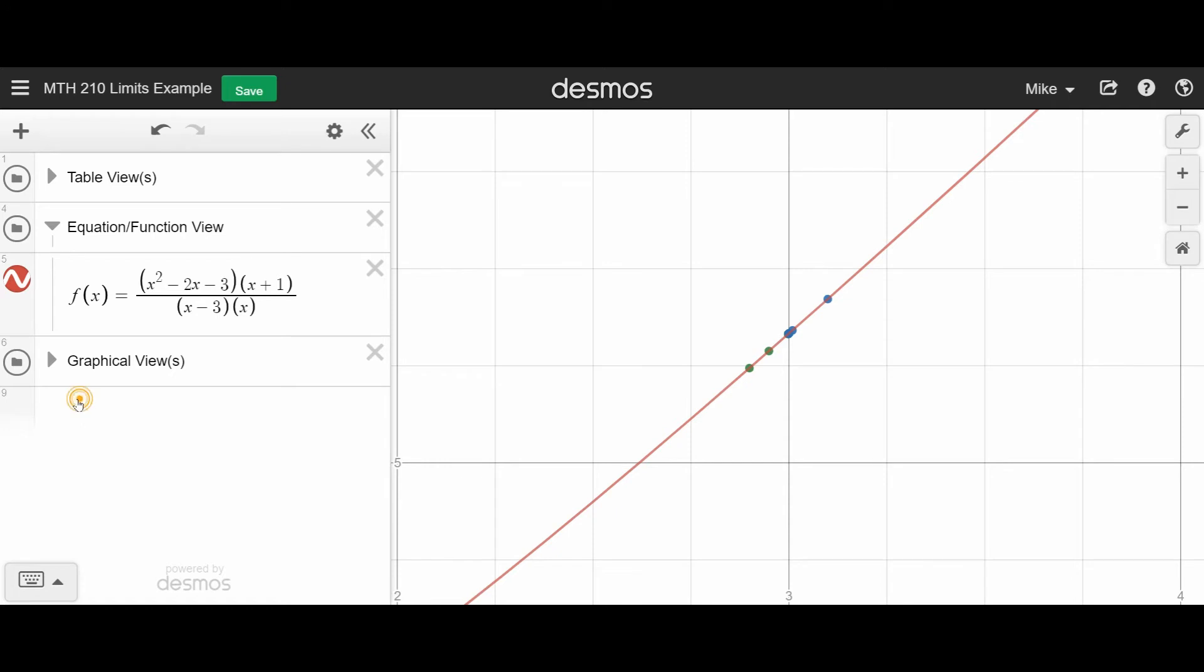If I type in f of 3, notice this is undefined. Because when I plug in 3 into the denominator, I get 0 in the denominator. So f of 3 is not actually defined in this function. And again, remember limits, I don't care what happens at 3. I care what happens as we get closer and closer and closer to 3. So the fact that it's undefined at 3 is not relevant. What I care about is what happens as x gets closer and closer to 3.